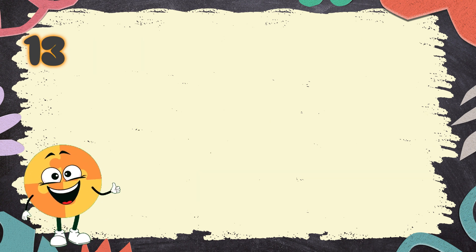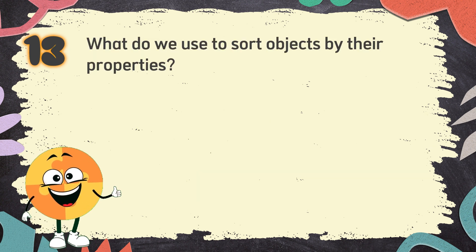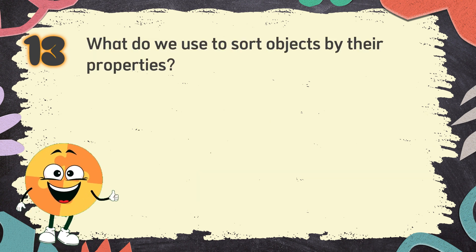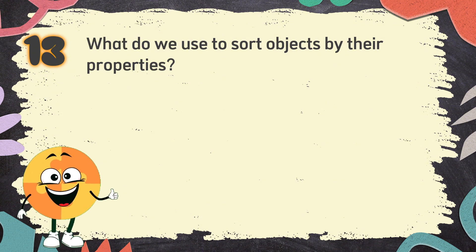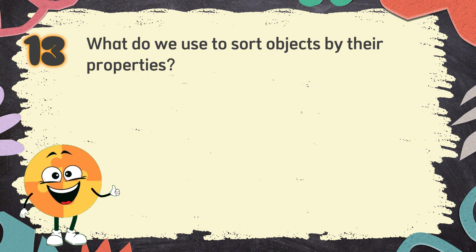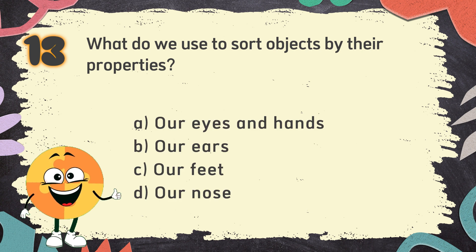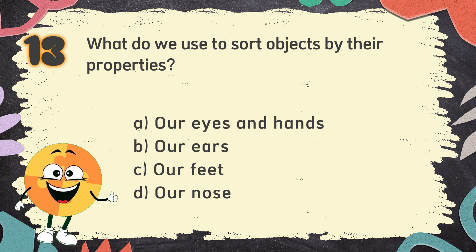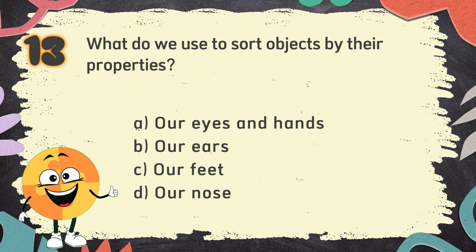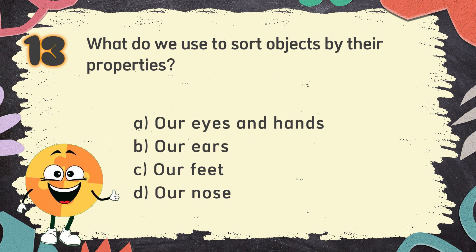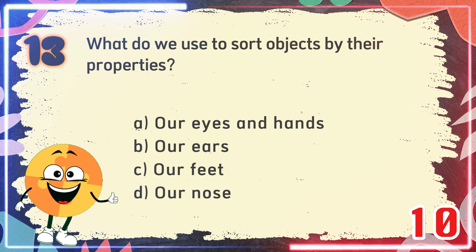Number 13. What do we use to sort objects by their properties? The choices are: A. Our eyes and hands, B. Our ears, C. Our feet, D. Our nose.